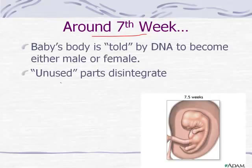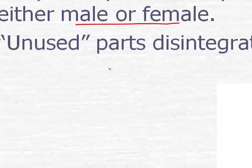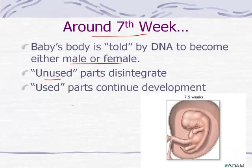You probably remember some things about X and Y chromosomes when we were talking about genetics, and that certainly comes into play here. As the development is occurring to become male or female, the unused parts - let's say it's a female that's going to develop a vagina - any parts that would look like a penis will disintegrate and go away. The parts that are to be used will continue to develop, so the female will develop a vagina and uterus and the ovaries, just as the DNA has the code for.